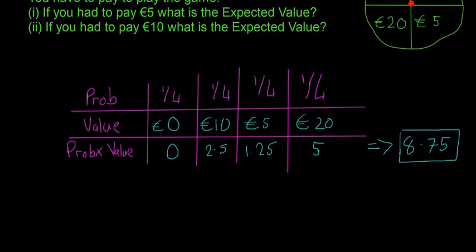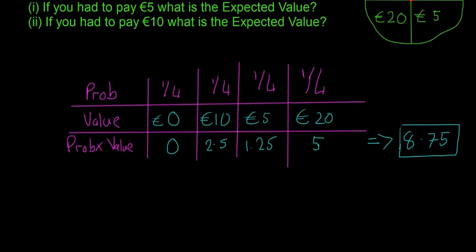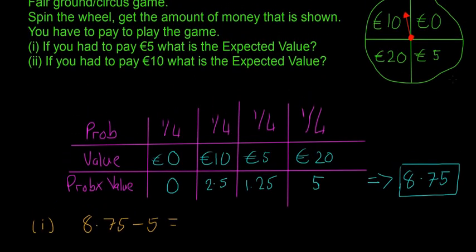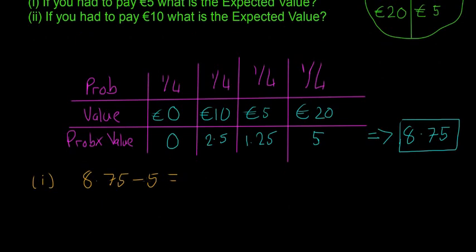So I'm just going to scroll down a little bit more. In case one, you have to pay 5 euro, and then we get 8.75 every single time. So what we're getting is 8.75 minus 5 euro, because every single time we get on average—remember you can't get 8.75 in this game, but on average we will get 8.75 back every single time, even though you're going to get 0, 10, 20, or 5. And so that's how the expected value works. So 8.75 minus 5, and on average we're going to get 3.75 every single time we play the game.